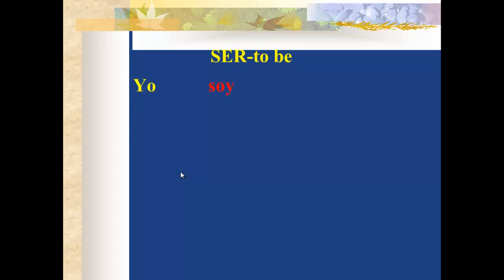Here are the forms of the verb ser. The first one: yo — what matches with yo is soy. Yo soy means I am. Tú — tú eres. Eres is the form of ser for tú, and tú eres means you are. Notice that in the bottom left-hand box you have él, ella, and usted, and for all three of these you would use es. Él es, ella es, and usted es — meaning he is, she is, and you are (formal).